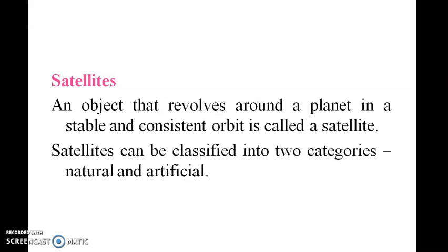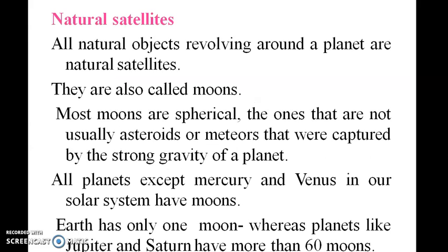An object that revolves around a planet in a stable and consistent orbit is called a satellite. Satellites are classified into two categories: natural and artificial. All natural objects revolving around a planet are called natural satellites, also called moons. Most moons are spherical; the ones that are not are usually asteroids or meteoroids captured by the strong gravity of the planet.